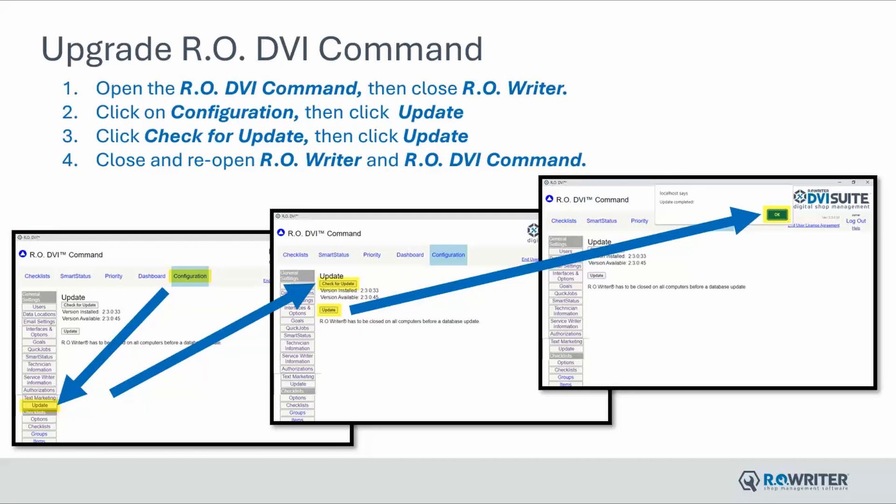Close RO Writer, then click on Configuration from the top of DVI command. Click Update, then click Check for Update, then click Update one more time. This will then give you a prompt that says your DVI suite has been updated.